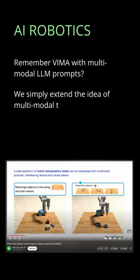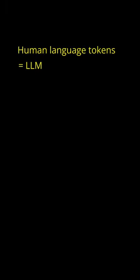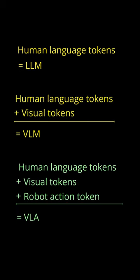How can we integrate our LLMs in AI robotics? To our human and visual tokens we add robot tokens. We have our LLMs, our visual language models, and with robots we have our visual language action models.